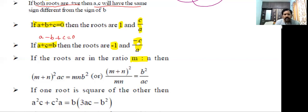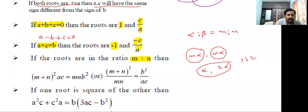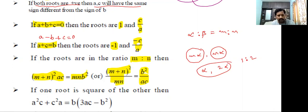If the roots are in the ratio m : n, meaning alpha : beta = m : n, we can write the roots as m·alpha and n·alpha. The shortcut formula is: (m + n)² · ac = mn · b², or equivalently (m + n)² / mn = b² / ac. This is a very important shortcut formula when roots are given in a ratio.